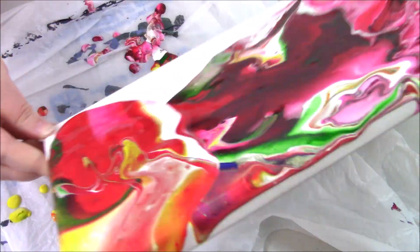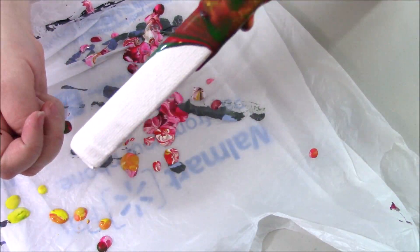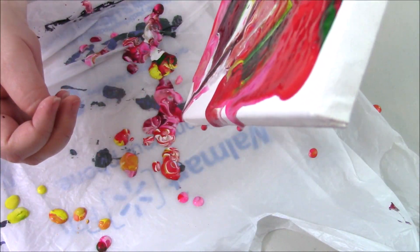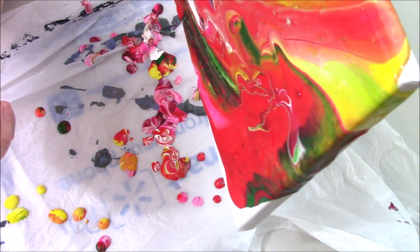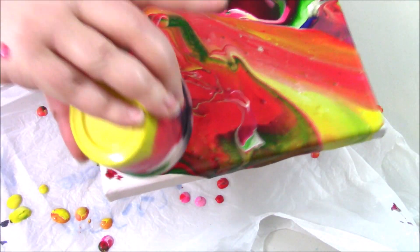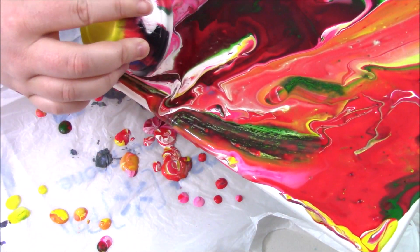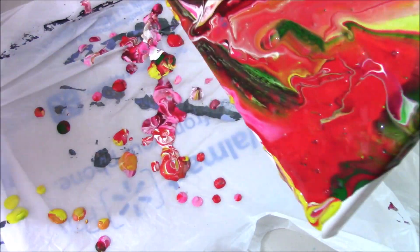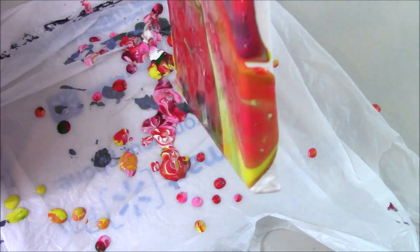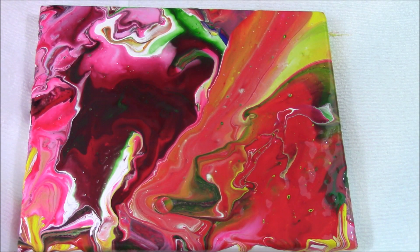And there's a lot of really cool things you can do if you have the right things to add. It doesn't sound like it's too pricey, but you can add things to create what are called cells, or kind of like bubbles where you have like colors from underneath peeking out. There's some really neat things, so I plan to do more of this in the future when I get the proper materials.